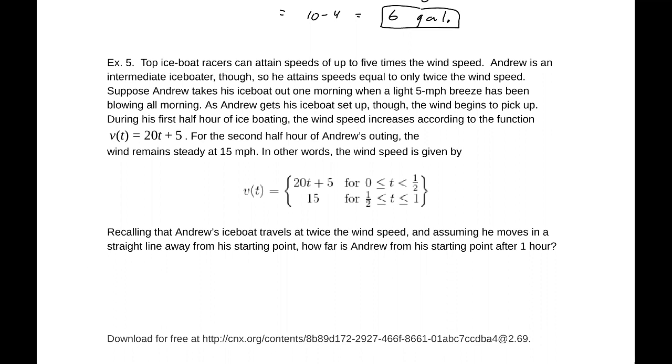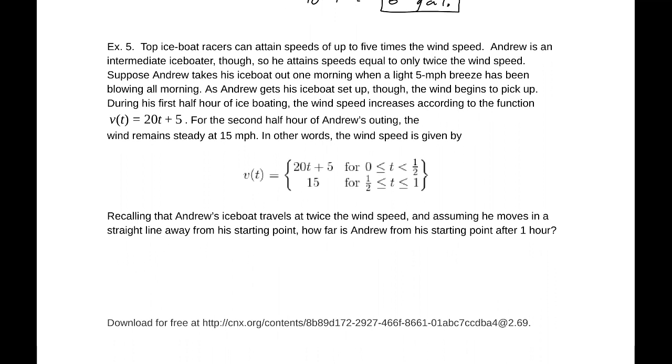For the second half hour of his outing, the wind remains steady at 15 miles per hour. Recalling that his ice boat travels at twice the wind speed, and assuming he moves in a straight line away from his starting point, how far is Andrew from his starting point after one hour? To find the distance, we are going to take the integral of velocity, and so we will get, that will give us a position function. So let's go ahead and take the integral of v(t) from 0 to 1. But wait, he is traveling twice the velocity. This is the velocity of the wind. We want to know his distance, not the wind's, how far the wind has traveled. So we will go ahead and take that by 2. That is his speed.